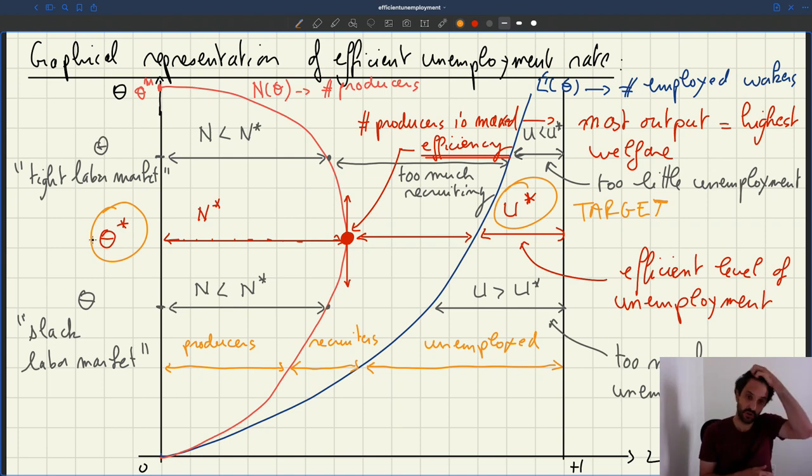This is a much more accurate description of reality, but it turns out that under that description, there is no guarantee that the market will operate efficiently. And therefore, there will be a goal for the government to try to stabilize the labour market and try to bring unemployment at the right level.